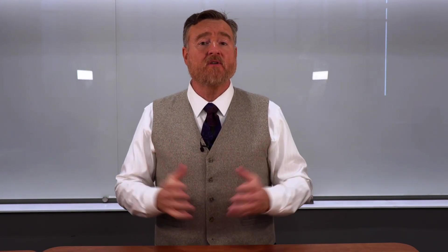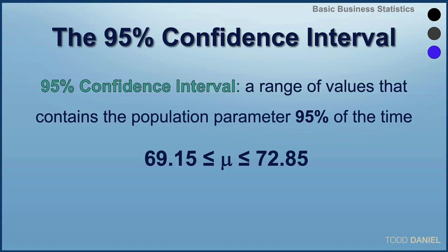Let's practice calculating a confidence interval around a mean. We can choose whatever level we want for a confidence interval. However, the most common are 90, 95, and 99%. The one that we will use the most is the 95% confidence interval. The 95% confidence interval is the range of values that contains a population parameter 95% of the time.